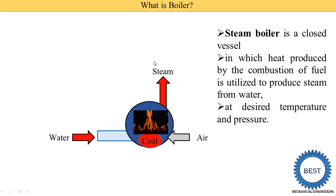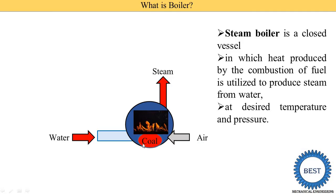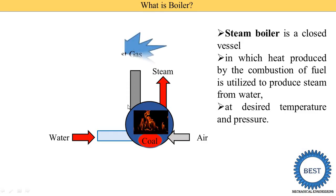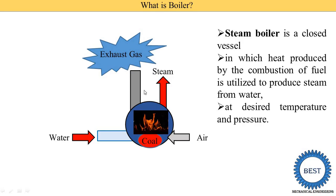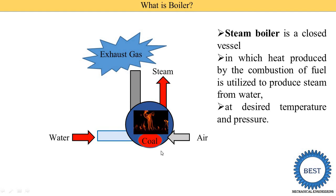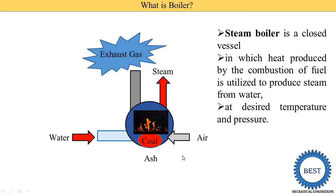So one input is water, which is converted into steam. The second input is air. Air and coal together create combustion, and this creates some exhaust gas. This exhaust gas is supplied to the atmosphere through the chimney. After combustion of the coal, some material comes out as gas. These are the different inputs and different outputs of the boiler.